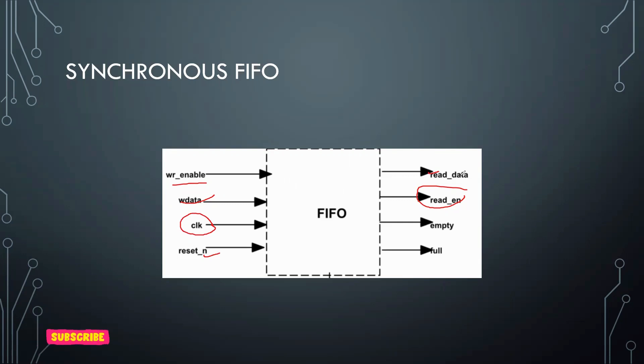Whatever the read pointer is pointing, from that memory location your data is taken. If you have entirely written all the rows in the FIFO, then it is full. If nothing is written in the FIFO, then it is empty. This is a basic understanding of FIFO.